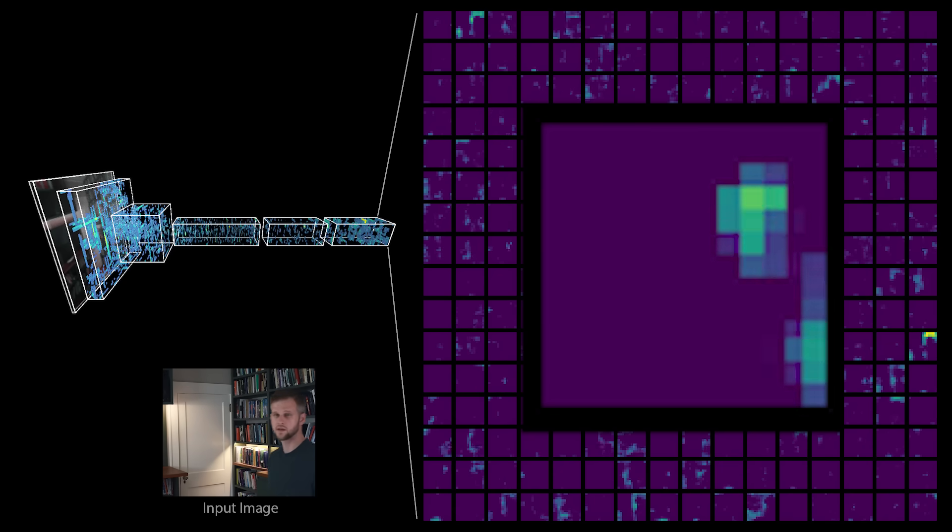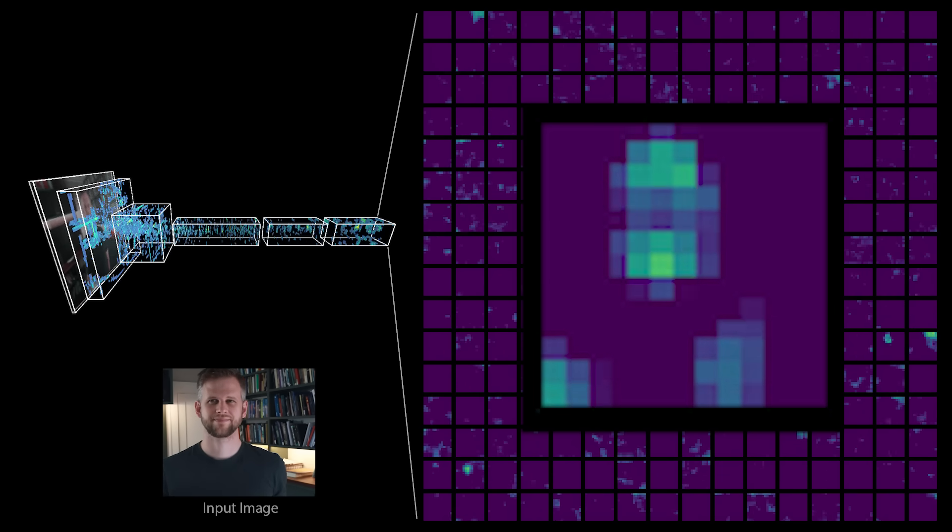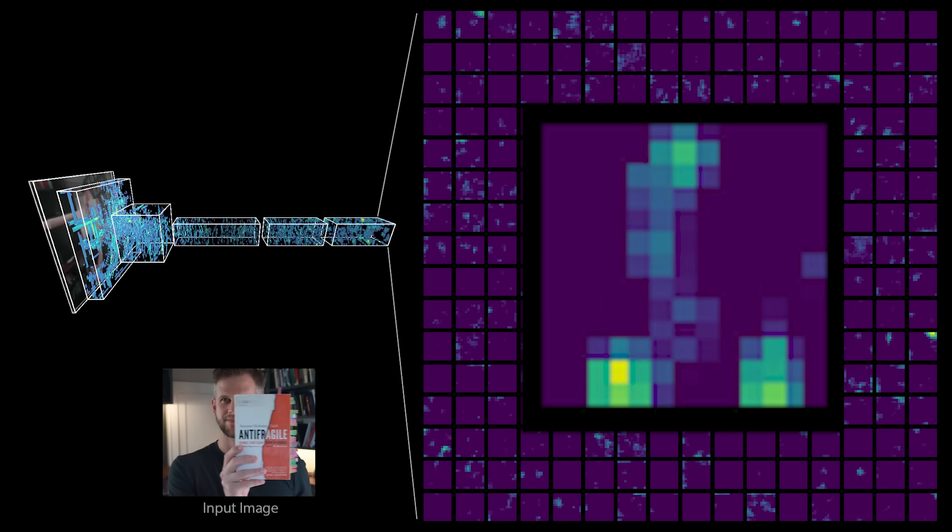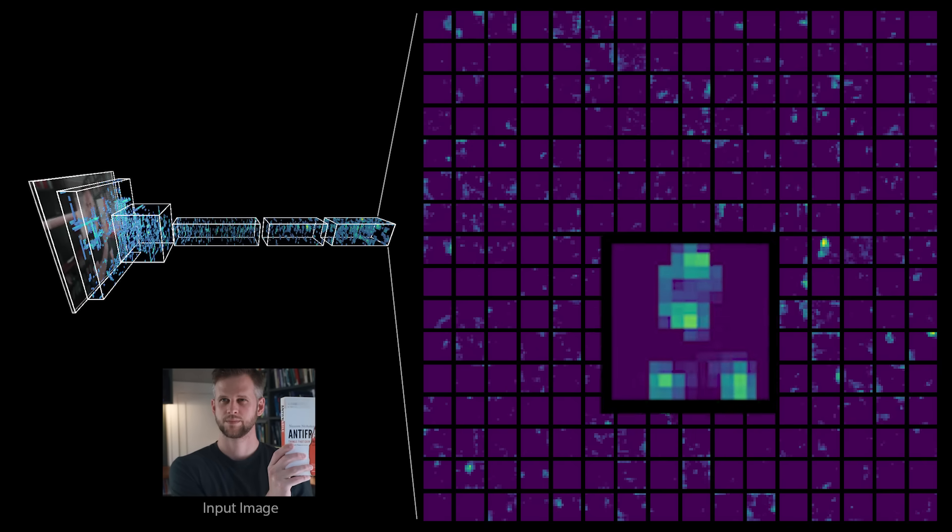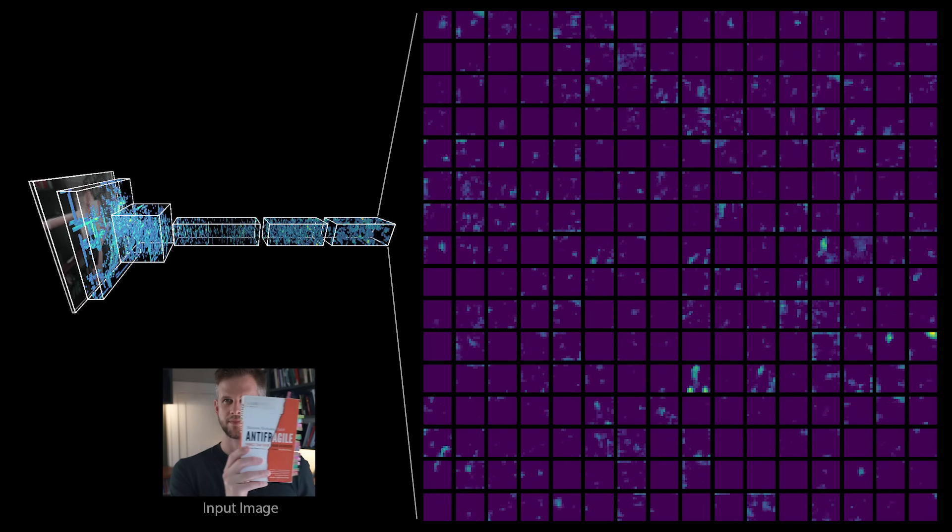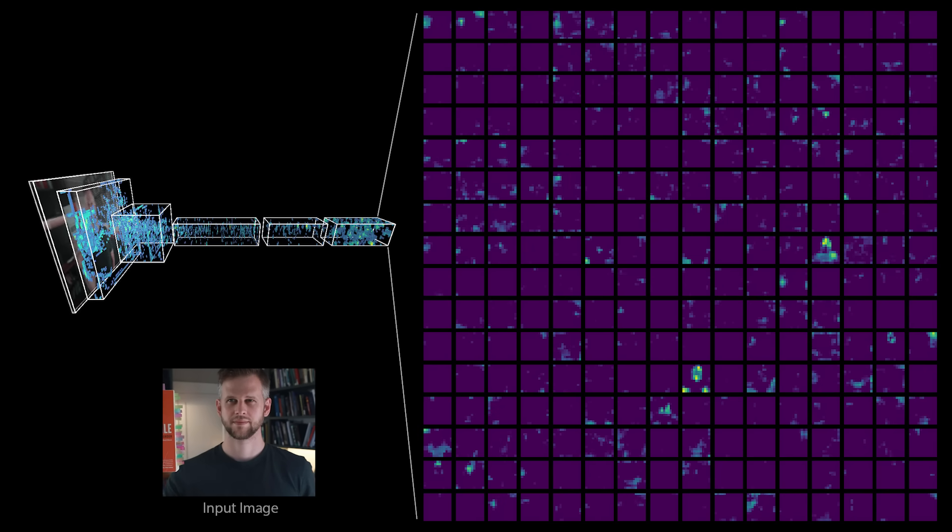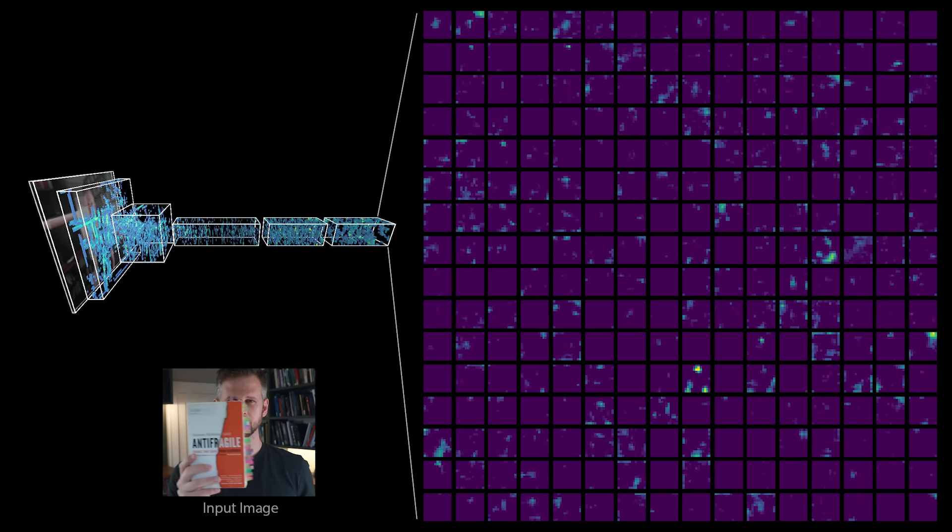And what's incredible here is that no one explicitly told AlexNet what a face is. All AlexNet had to learn from were the images and labels in the ImageNet dataset, which does not contain a person or a face class. AlexNet was able to learn completely on its own both that faces are important and how to recognize them.